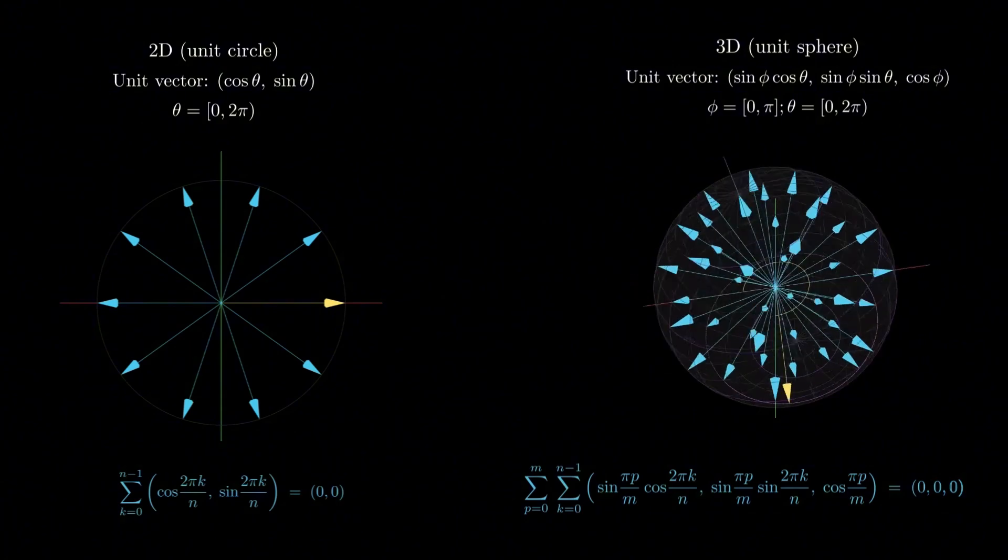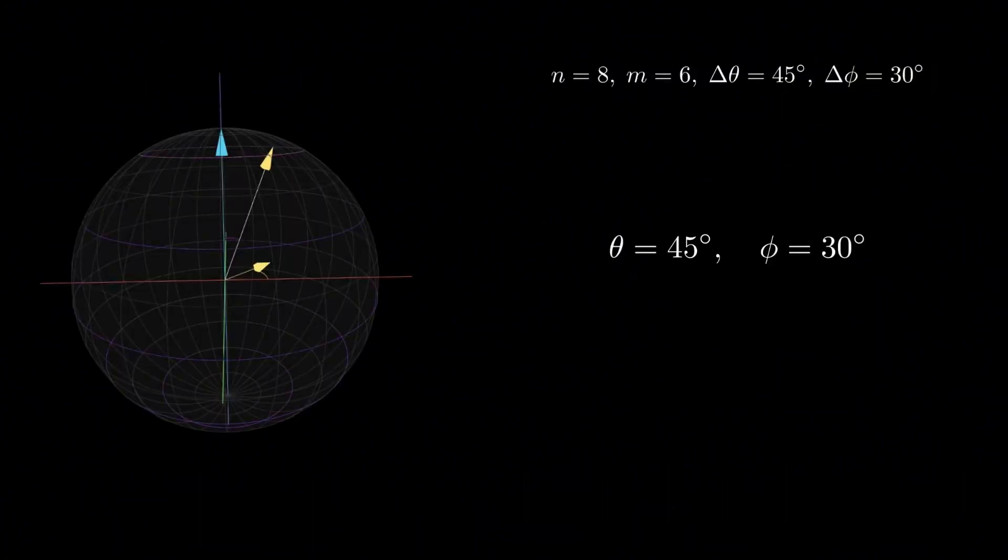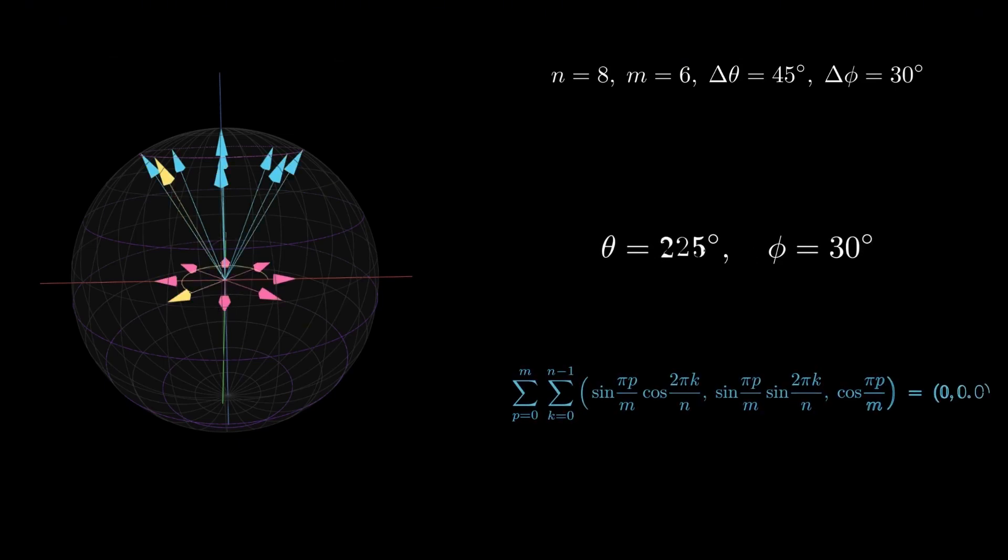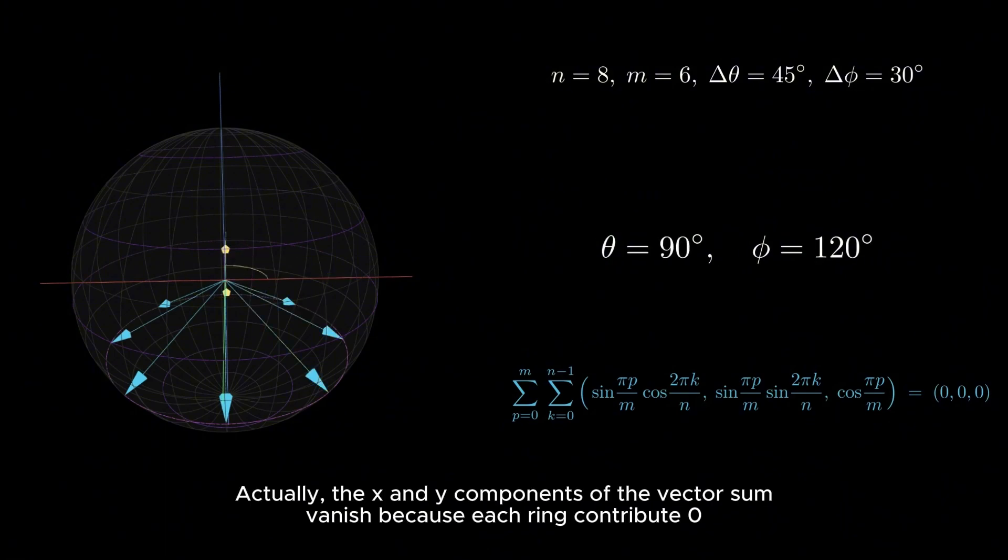We can visualize it this way: for a fixed φ, rotating θ through 2π generates a ring of vectors evenly spaced around a circle, just like the 2D case. Since the vector sum of each ring vanishes, we repeat this process for multiple values of φ, stacking rings at different latitudes. So intuitively, the total vector sum vanishes because each ring contributes zero.